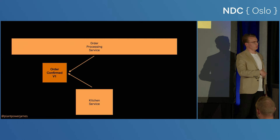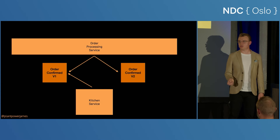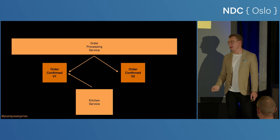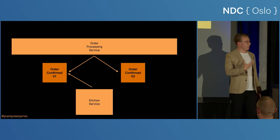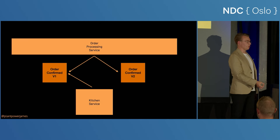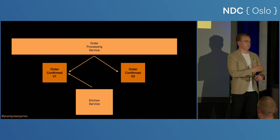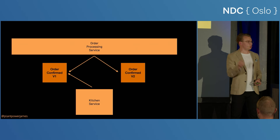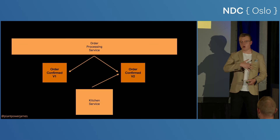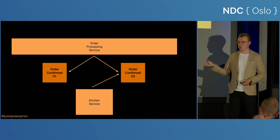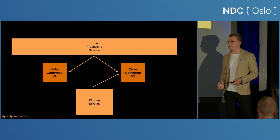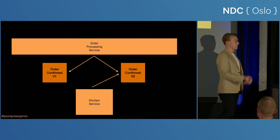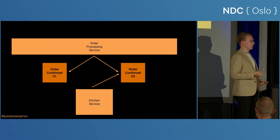What versioning allows you to do is introduce breaking changes in a really safe way. Right now you're publishing version one of the order-confirmed event and you want to introduce a breaking change. Instead of completely overwriting version one, you publish two versions of the same event at the same time. Version two is upset because nobody cares about it yet. You set a deprecation date on version one — it's really important you stick to that date, otherwise you'll end up managing lots of versions of events. You say on a certain date we're going to stop publishing version one, and over time all your services migrate to version two.